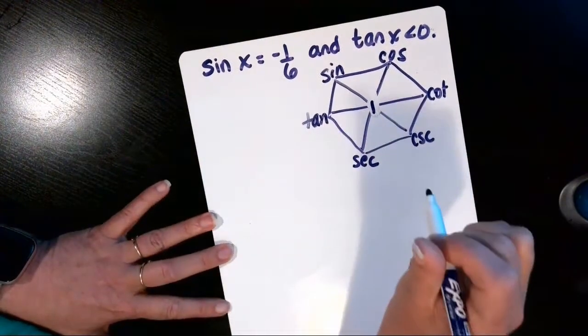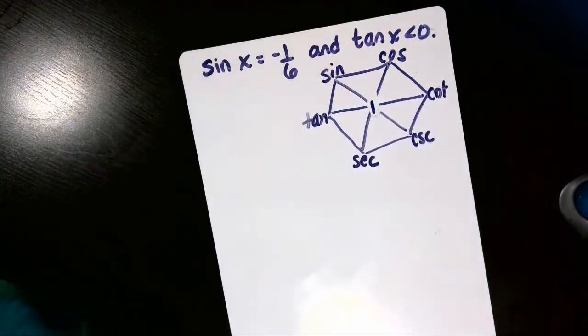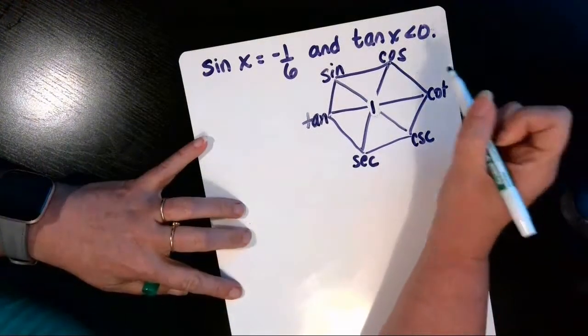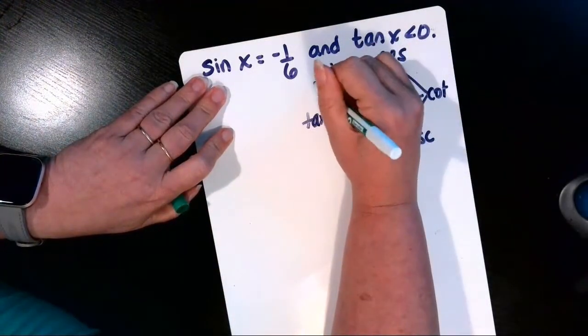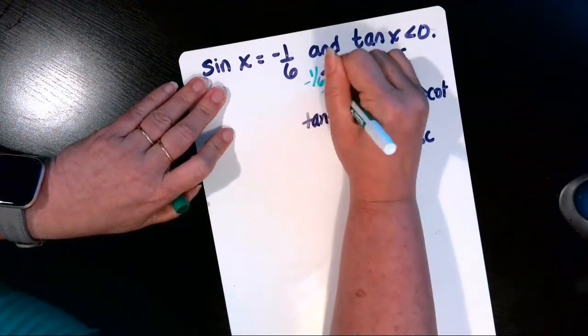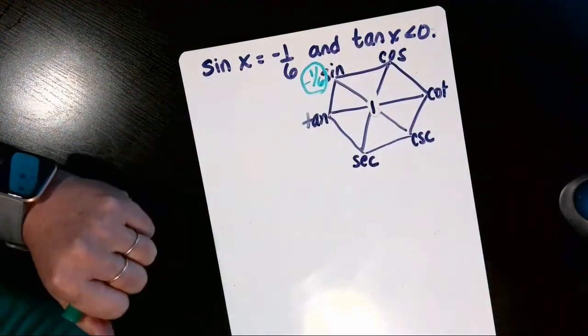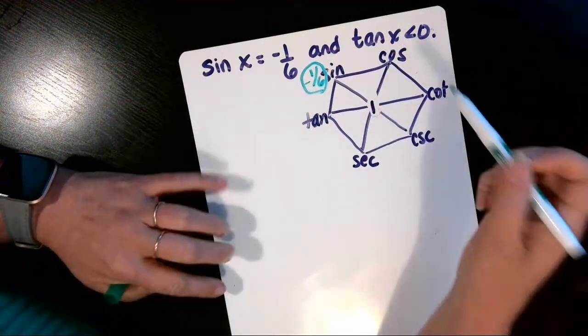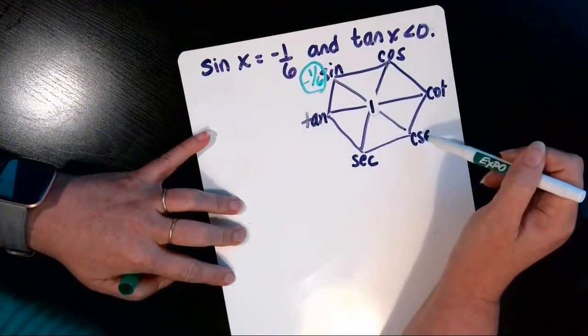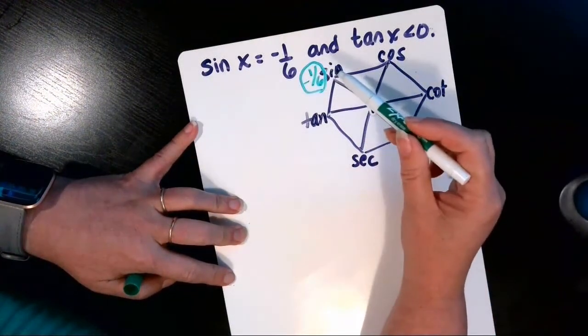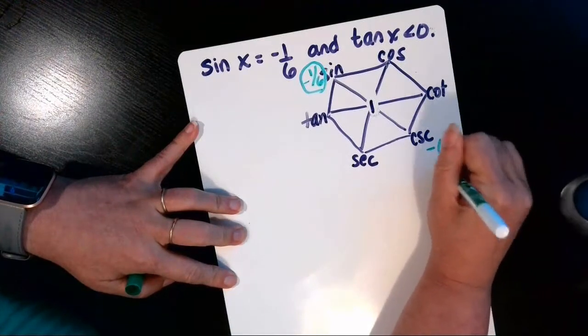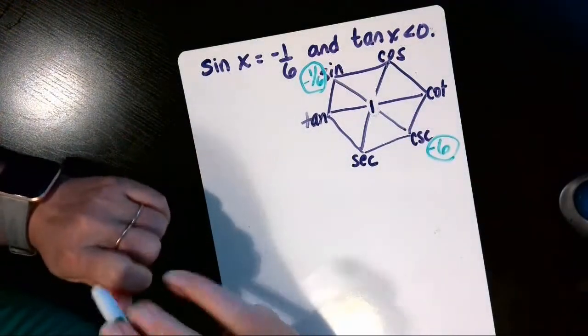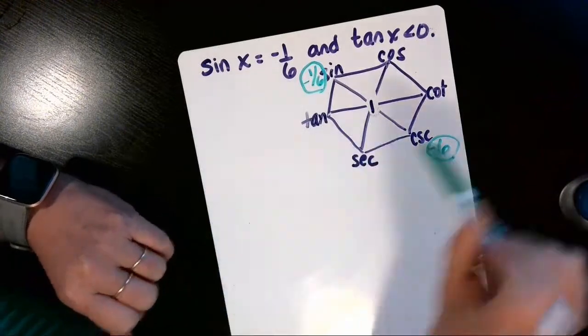Okay, then we'll change colors and put in our given information. The sine of x is negative 1/6, I'll put that over here in this corner in green. Right away we can get the reciprocal - the reciprocal of negative 1/6 is negative 6, and that'll be the value of the cosecant. That's all the further we can get until we use a Pythagorean identity.